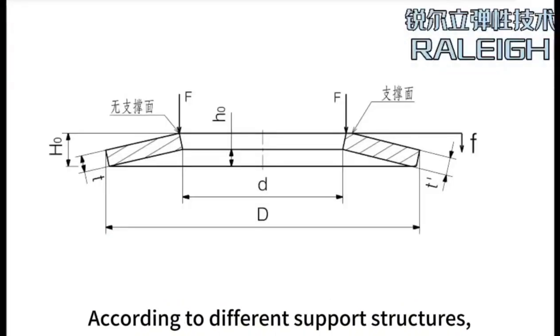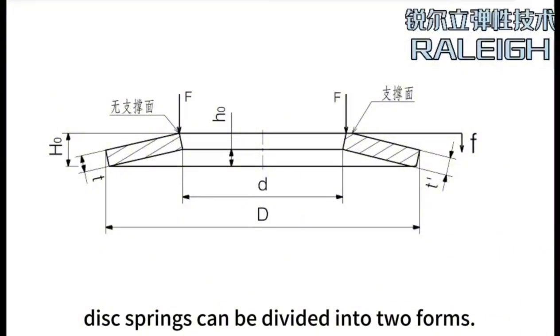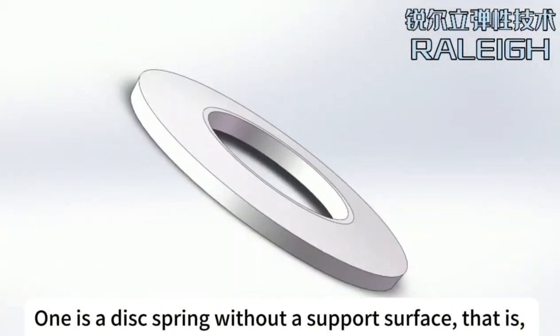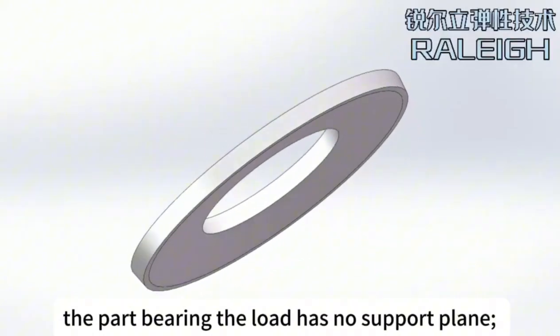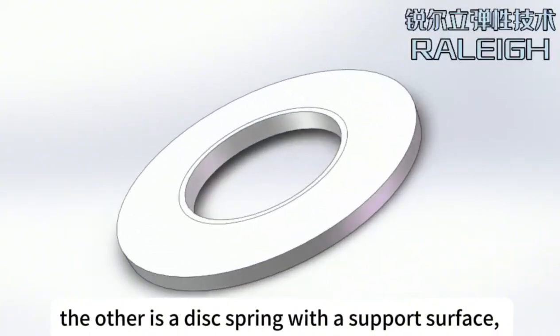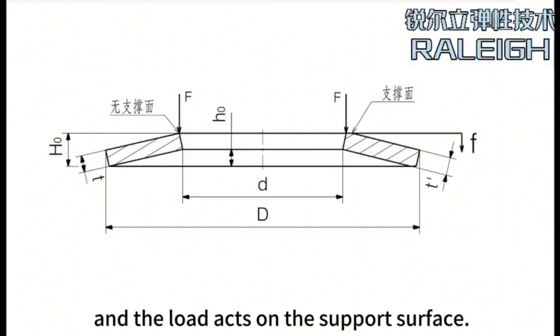According to different support structures, disc springs can be divided into two forms. One is a disc spring without a support surface, that is, the part bearing the load has no support plane. The other is a disc spring with a support surface, and the load acts on the support surface.